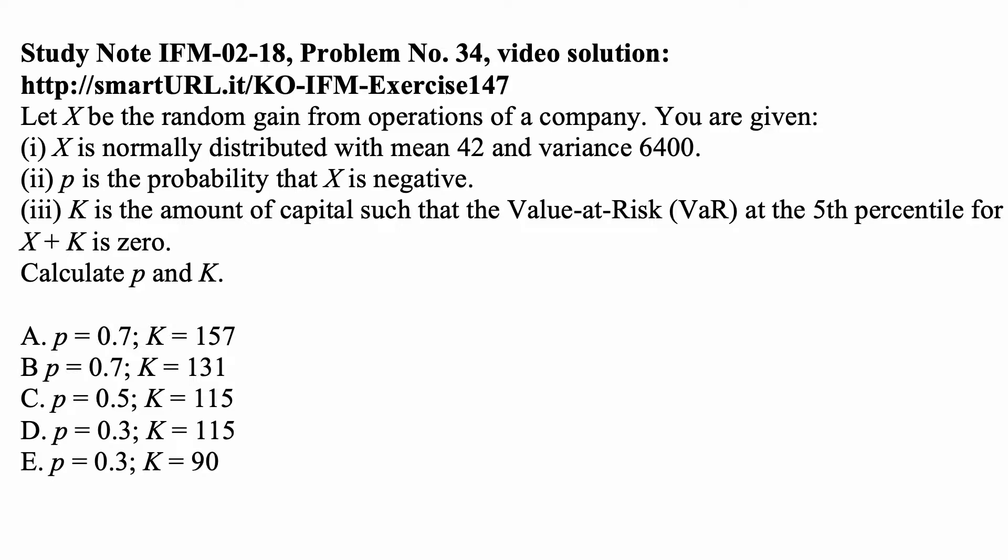P is the probability that X is negative. K is the amount of capital such that the value at risk at the fifth percentile for X plus K is zero. Calculate P and K.